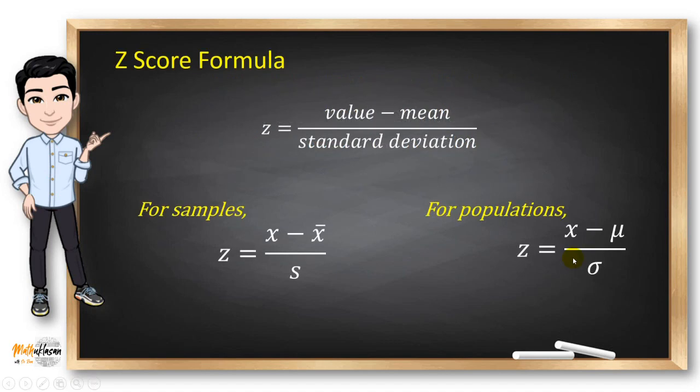The formula for the z-score is just equal to the value minus the mean divided by the standard deviation. For samples, we use x to represent each value in the dataset, x-bar for the sample mean, and s for the standard deviation of the sample.